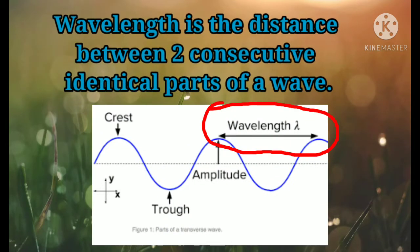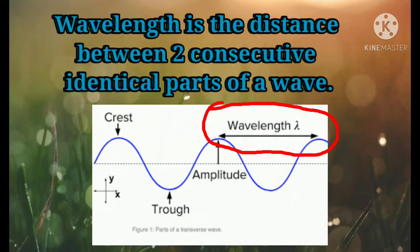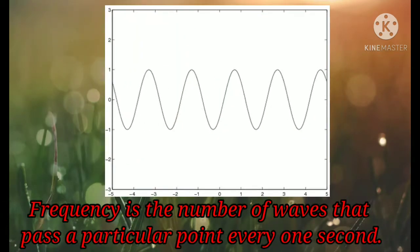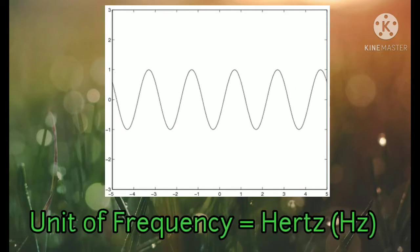Wavelength is the distance between two consecutive identical parts of a wave. Frequency is the number of waves that pass a particular point in every one second. Unit for frequency is hertz.